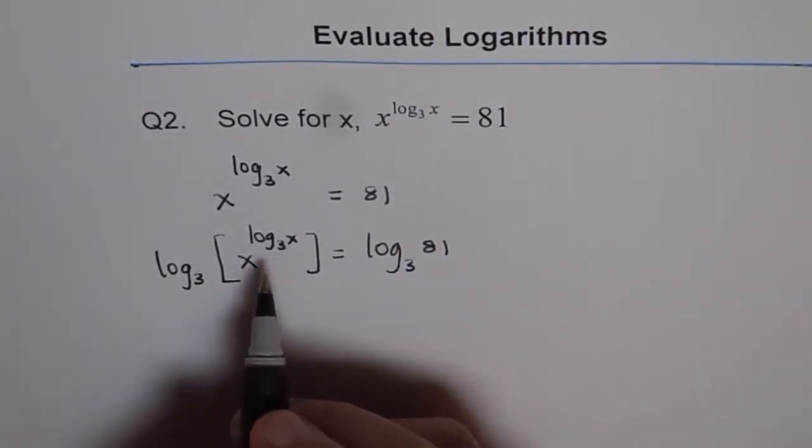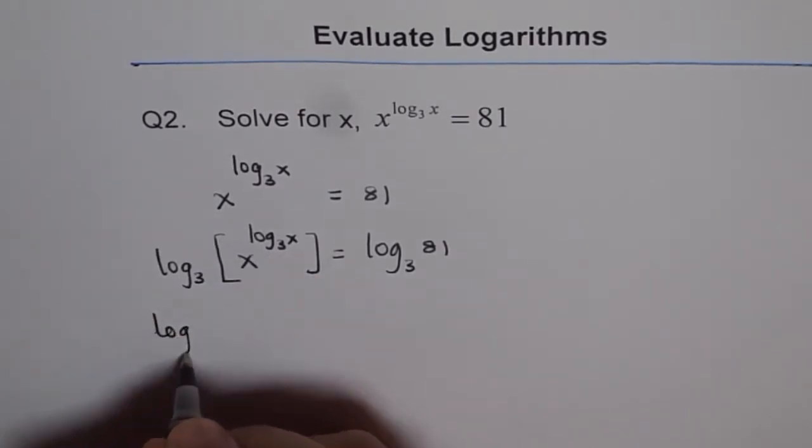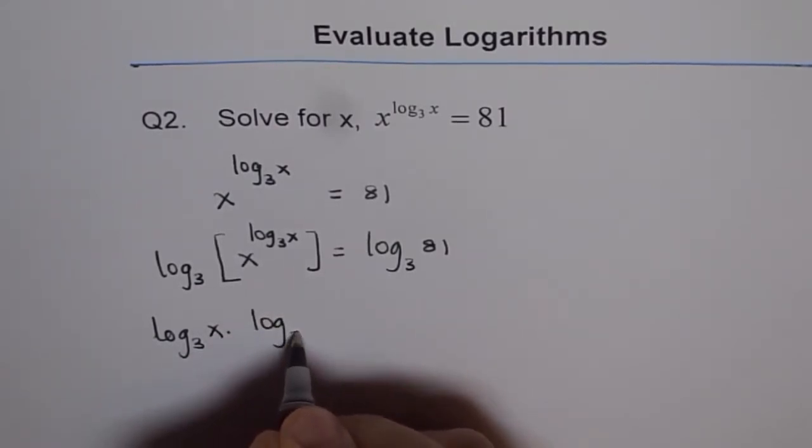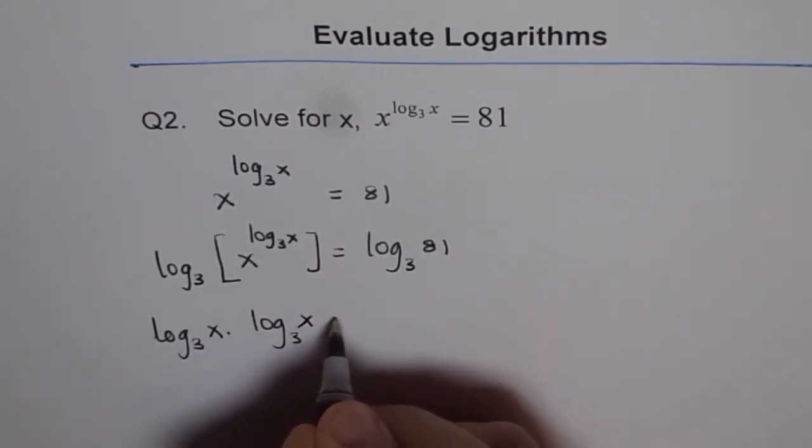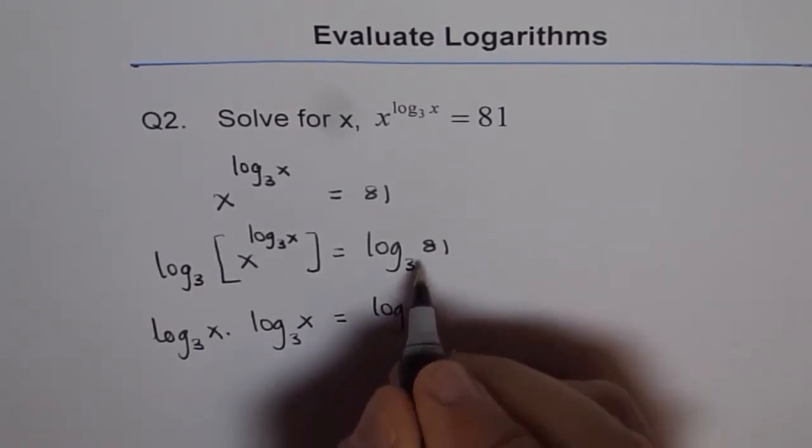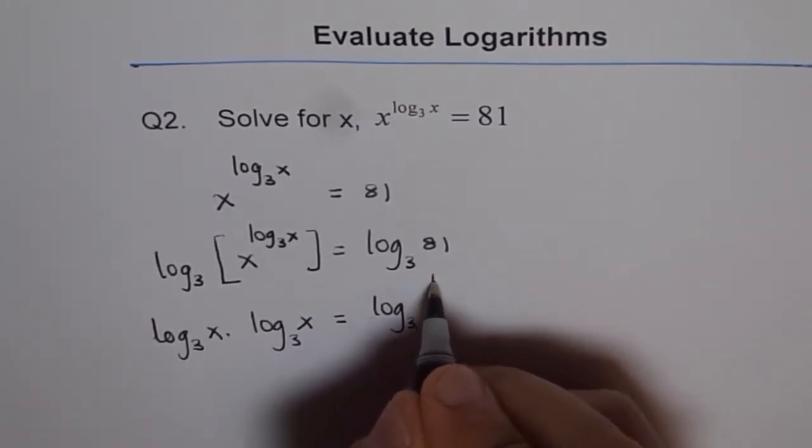Now, we will use the power rule here. So, if we use the power rule, we get log base 3 of x times log base 3 of x equals to log base 3. And 81 can be written as 3 to the power of 4.